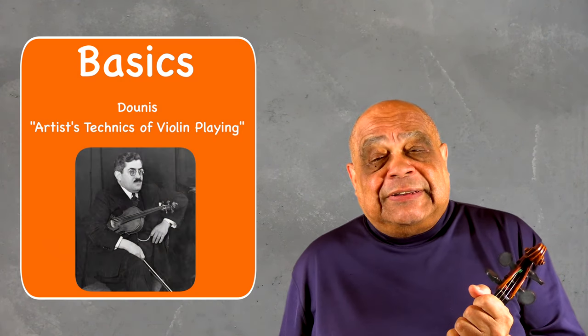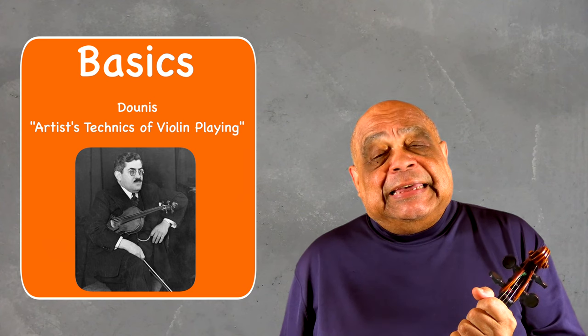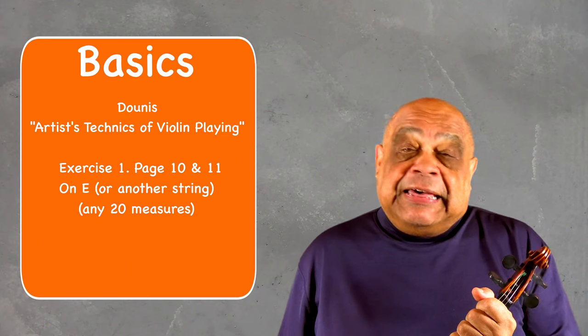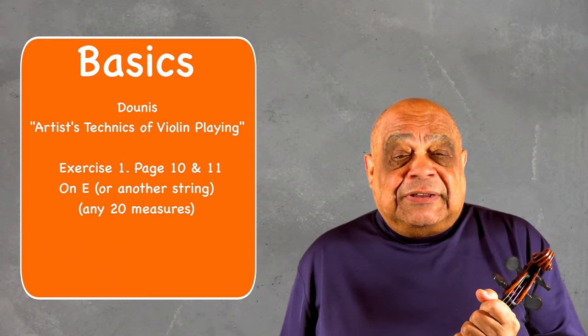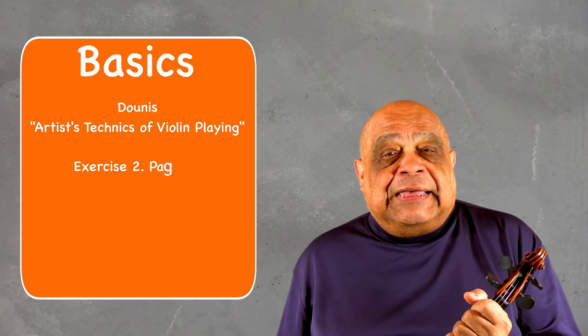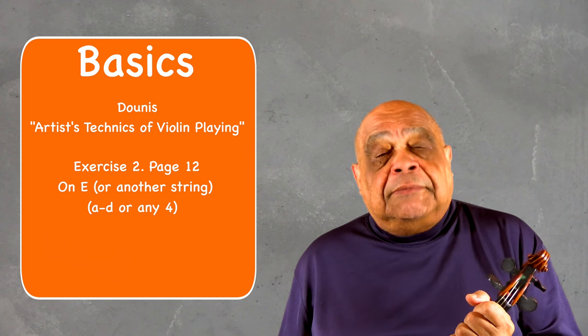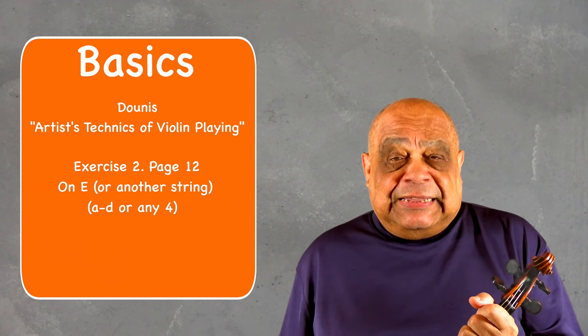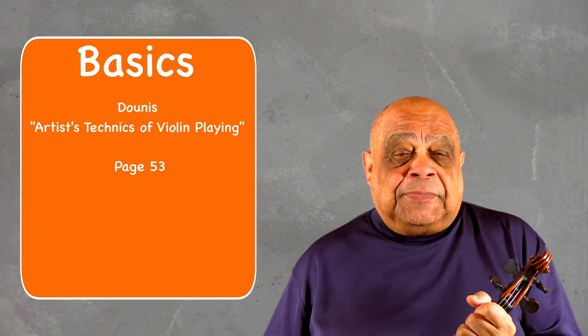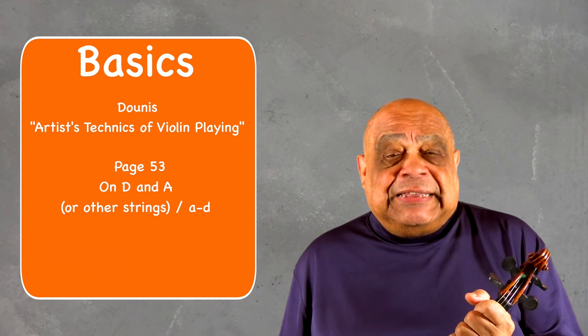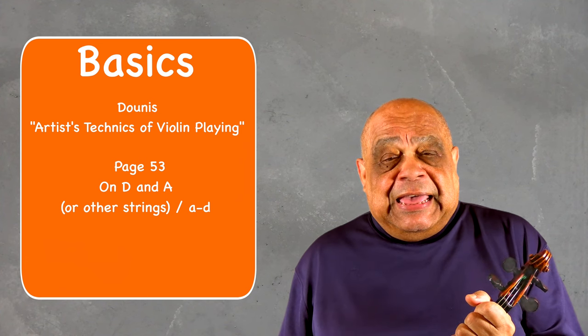Now from Dunas and his artist techniques of violin playing you have many different options. So here's a sample. Exercise 1 pages 10 and 11 on the E string or another string. Choose any twenty measures. Exercise 2 page 12 on the E string or another string. Do A through D or any four. Page 53 on the D string and the A string or any other strings. A through D.